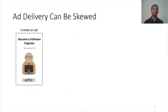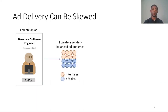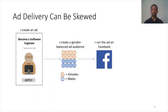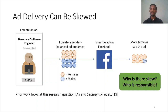To see why, let's start with an example. Let's say I'm a tech company and I would like to advertise a software engineering job position. So I create this ad and to avoid discrimination, I create a gender-balanced audience with 50% females and 50% males, and I run my ad on Facebook's ad platform. The outcome I get is that more females see the ad, even though I targeted a gender-balanced audience.